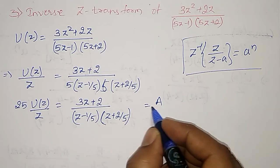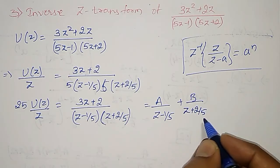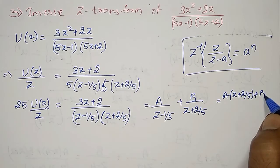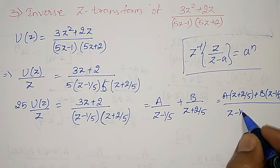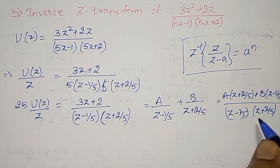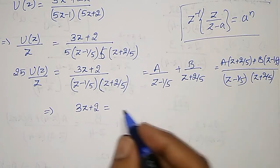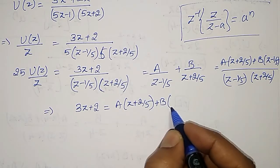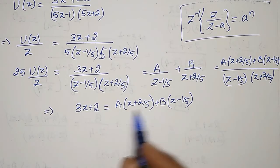Therefore I write this as A divided by (Z minus 1/5) plus B divided by (Z plus 2/5), which equals [A·(Z + 2/5) + B·(Z minus 1/5)] divided by (Z minus 1/5)·(Z + 2/5). Comparing numerators: 3Z + 2 equals A·(Z + 2/5) plus B·(Z minus 1/5). Now I have to find the values of A and B.